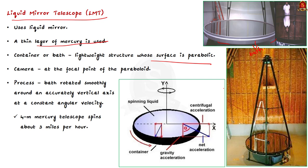Mercury is kept in a bowl container, also called a bath. The bath is a lightweight structure whose surface is parabolic, and only a thin layer of mercury is needed to produce the accurate mirror shape. This ensures that the mirror overall remains lightweight even though mercury has high density. Then a camera is put at the focal point of the paraboloid. The bath is rotated smoothly around an accurately vertical axis at a constant angular velocity. The rim of a typical 4-meter mercury telescope spins about 3 miles per hour and the images are captured in the camera.